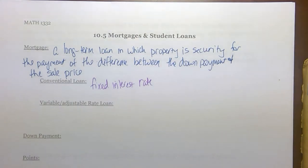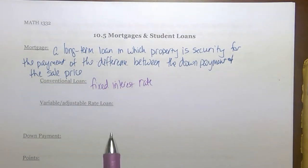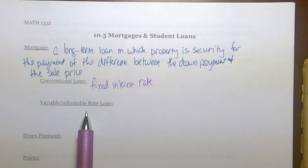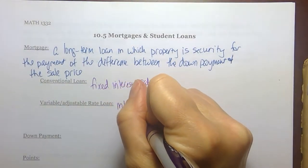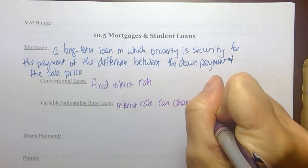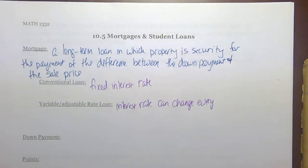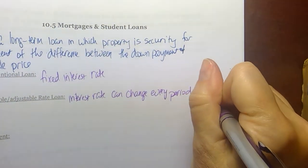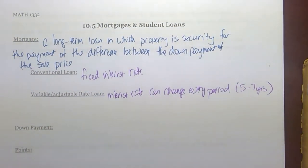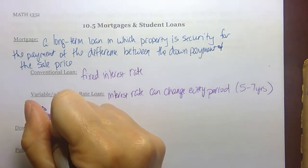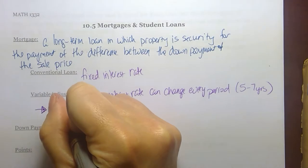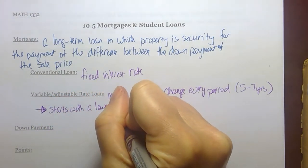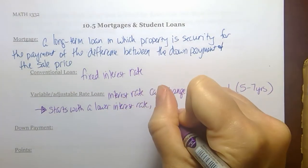That said, your homeowners insurance and taxes could change, which could make your house payment go up or down, because we typically include those values in our monthly house payment. But the principal and interest part will not change because the interest rate is fixed. On a variable or adjustable rate loan, the interest rate can change every period — typically every five to seven years. A variable rate loan is intriguing and looks good to people because it usually starts with a lower interest rate, but the problem is it's less predictable.